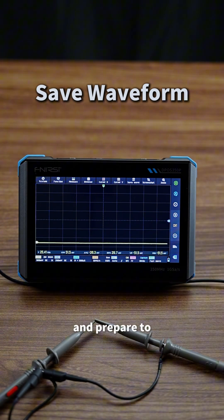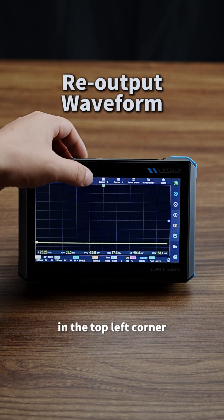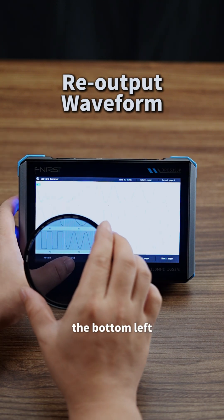Then unplug the probe and prepare to output it again. Step 1: Tap File Viewer in the top left corner. Select Cropped Waveform View. Click the image, then tap Select at the bottom left.